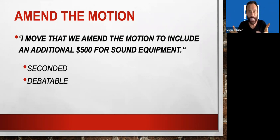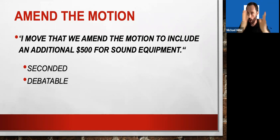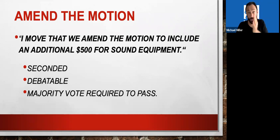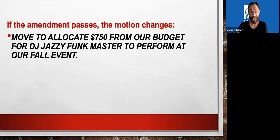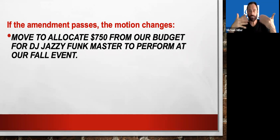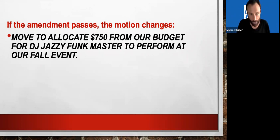So now we debate it. People like it. People don't like it. People question whether we have the money. Once all debate is finished, if no one has anything else to say, it goes to a vote. And if the majority of the members say yes, the motion passes, and the motion changes. Now it reads: I move to allocate $750 from our budget for DJ Jazzy Funk Master to perform at our fall event. In other words, the $500 gets added because people agreed with your motion to amend and voted in favor of it.